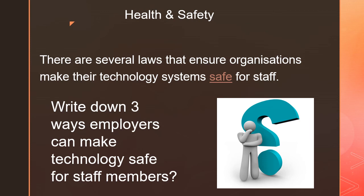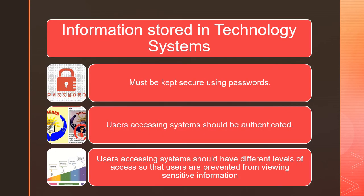The section on health and safety: there are several laws that ensure organizations make their technology systems safe for staff. Write down three ways employers can make technology systems safe for staff members. Remember to pause after each task before moving to the next slide. These are some of the possible answers: information must be stored and kept secure using passwords; users accessing systems should be authenticated; users accessing systems should have different levels of access so that users are prevented from viewing sensitive information.